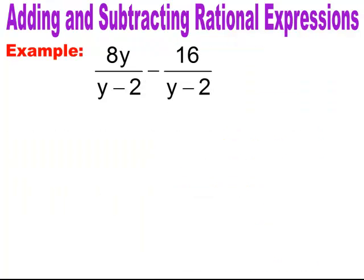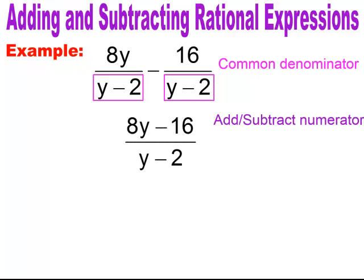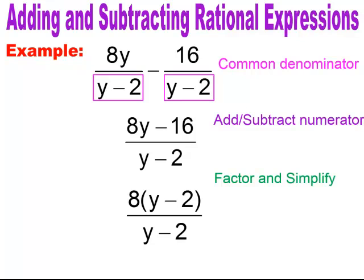Here's an example. We have a common denominator of y minus 2, so I can subtract the numerators and I end up getting 8y minus 16 over my common denominator of y minus 2. Now I need to simplify, and to simplify I need to factor. In this case the numerator will factor with a GCF of 8, so I end up getting 8 times (y minus 2). Now I can reduce the common factor of y minus 2 and my answer is 8.